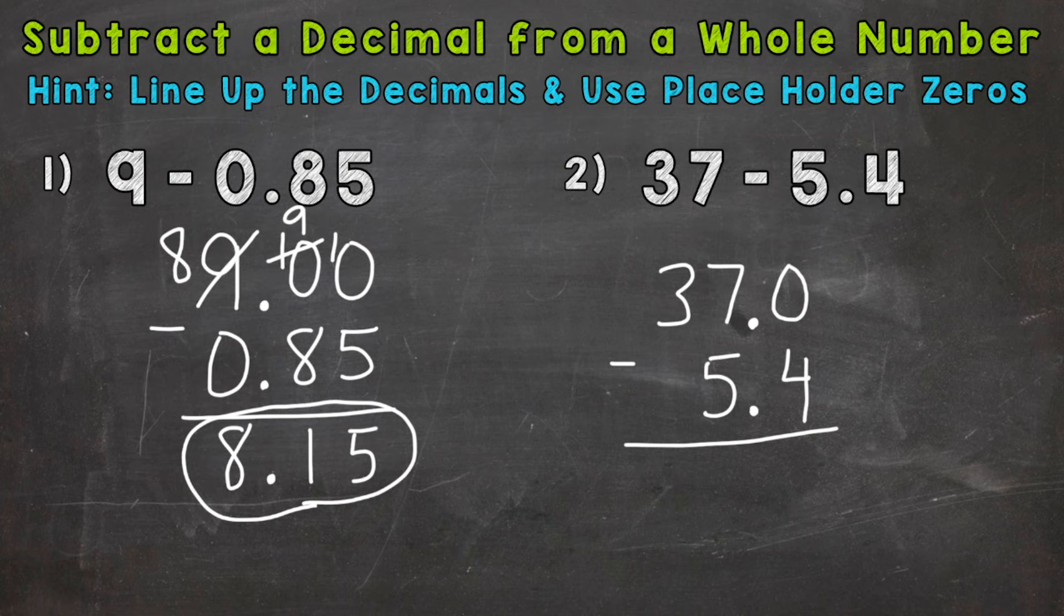And remember, the most common mistake is just dropping that four without borrowing. So we need to borrow from the seven. So it's a six now. And we end up with 10 minus four, which is six. Bring your decimal straight down. It's lined up throughout the whole problem. Six minus five is one. And we have a three over here. So we end up with 31 and six tenths.